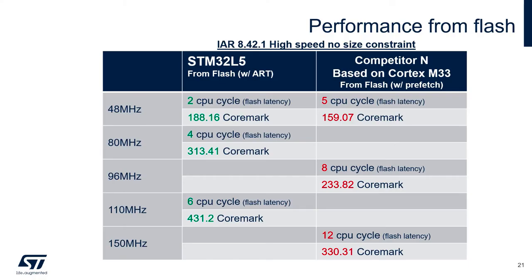Here you see a comparison of the STM32 L5 with a competitor that is also based on Cortex-M33. To make this comparison fair, we are using the same compiler and the same compiler flags — this is also the reason why the result for 110 MHz is a few percent less than in the demonstration we just did. The L5 scores at 80 MHz just a few points less than the competitor device at 150 MHz. To summarize: the system-level architecture of a chip is an extremely important factor that affects not only performance but also power efficiency, as you will see in the next demonstration.